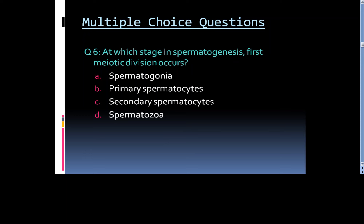Question 6: At which stage in spermatogenesis does the first meiotic division occur? Option A. Spermatogonia, Option B. Primary spermatocytes, Option C. Secondary spermatocytes, or Option D. Spermatozoa.